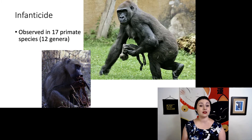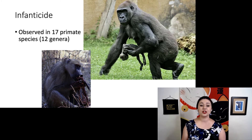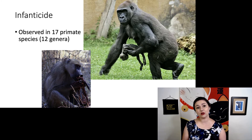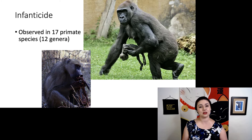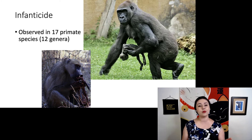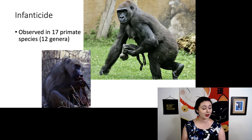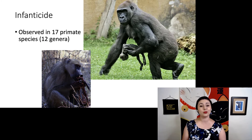Another thing we see is infanticide, and we do think this is a result of sexual selection. We have observed in 17 different primate species across 12 different genera that males will sometimes kill newborn infants. This happens when a new male moves into a group — he specifically kills infants he knows aren't his. This means the female will ovulate sooner and be available to have his offspring more quickly. Obviously it's not pretty, but evolution isn't nice. Evolution sometimes comes up with some pretty horrible results.